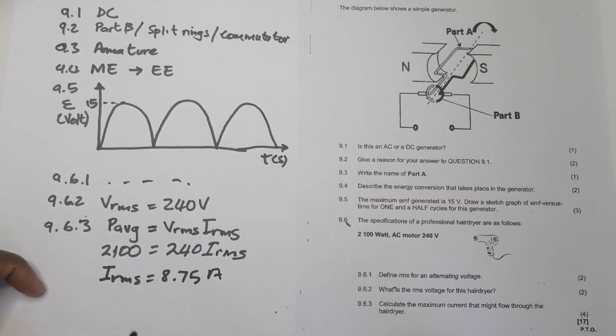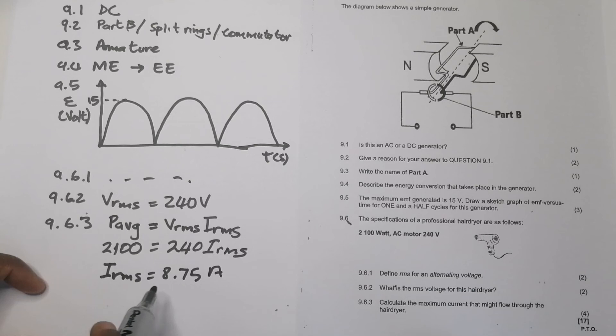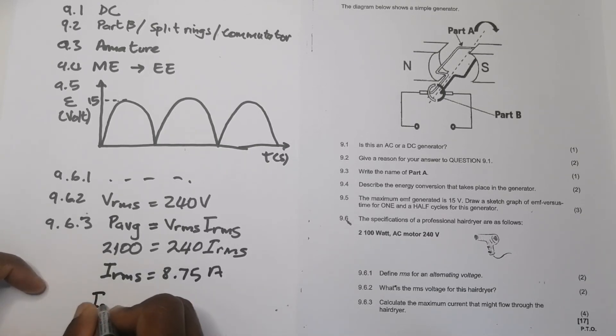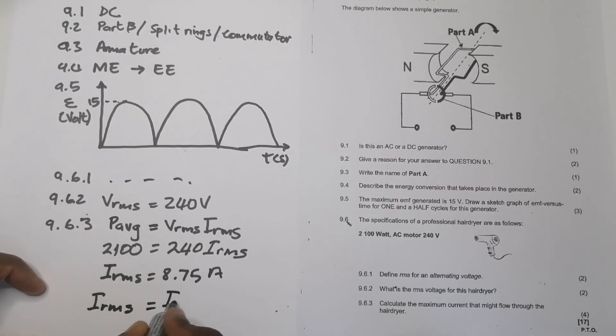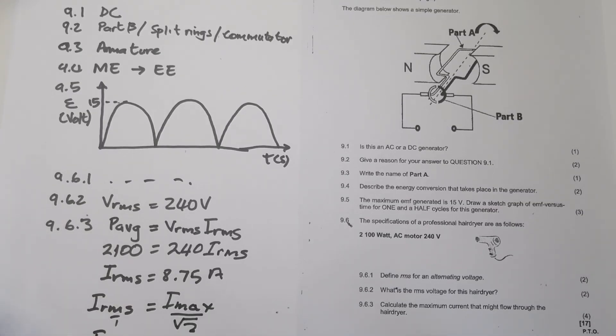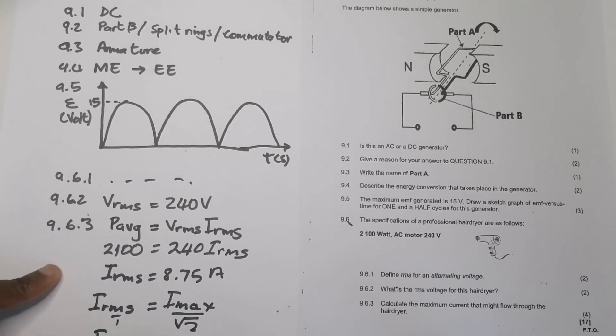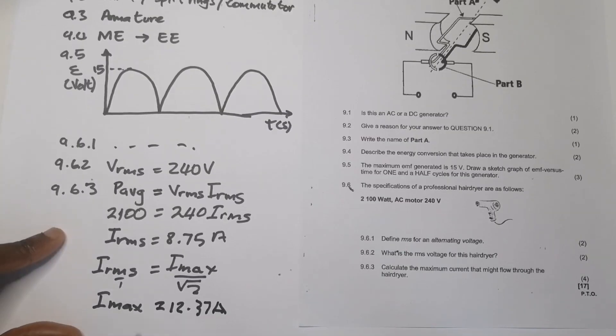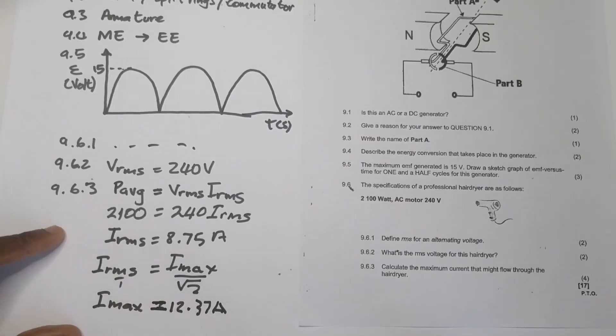But remember they said they wanted the maximum, so I need to convert that RMS value to maximum. But I know that IRMS is simply equals to I max divided by square root of 2. So if I want I max, all I simply do is multiply that RMS value by root 2, and I find I max. I'm going to take 8.75 and multiply that by the square root of 2, and I get my maximum value to be 12.37. So my I max value is 12.37 amperes.